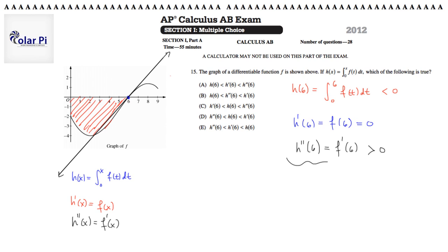So since h''(6) is greater than 0, h'(6) is equal to 0, and h(6) is less than 0, the order in which these guys should be ordered should be in this following one. The h(6), which is negative, is clearly less than h'(6), which is 0, which is clearly less than h''(6), which is positive.